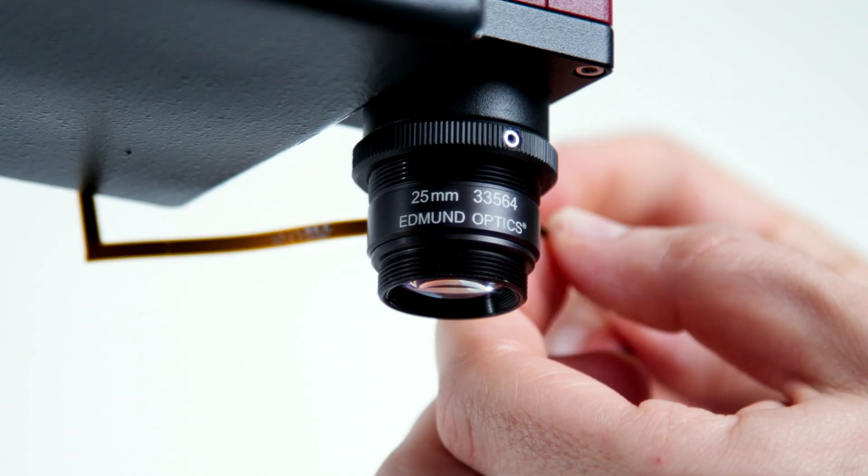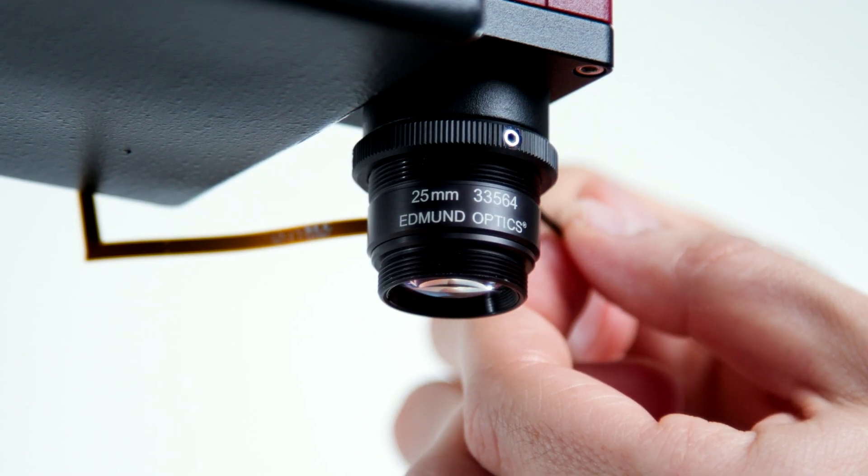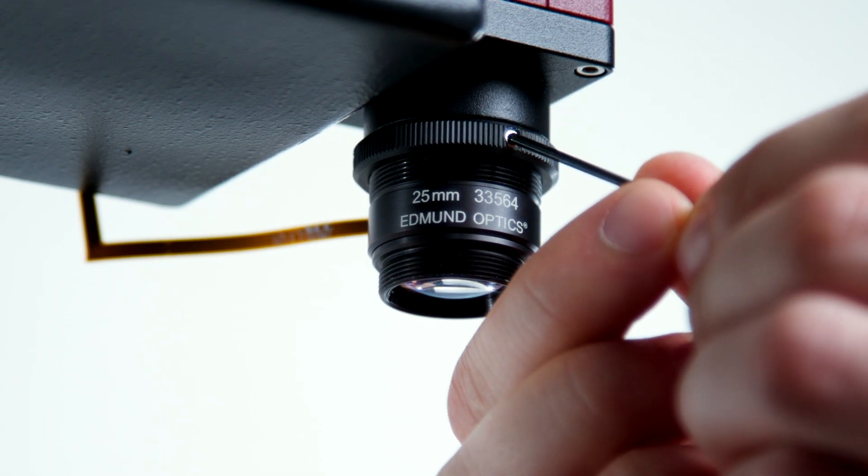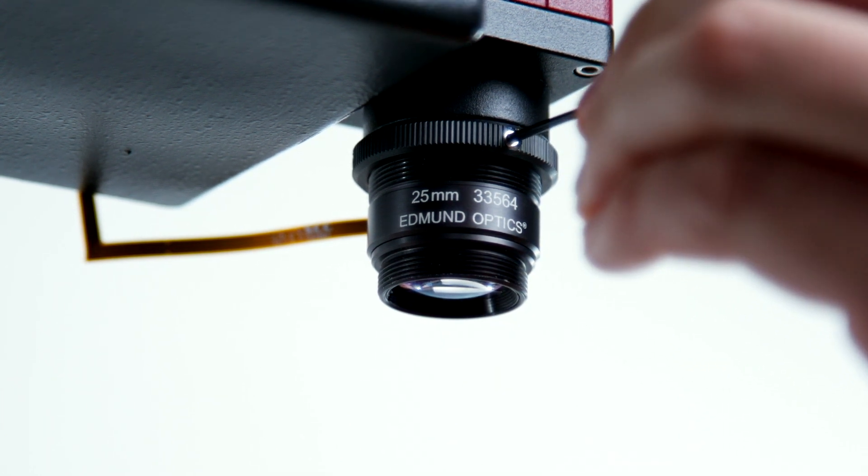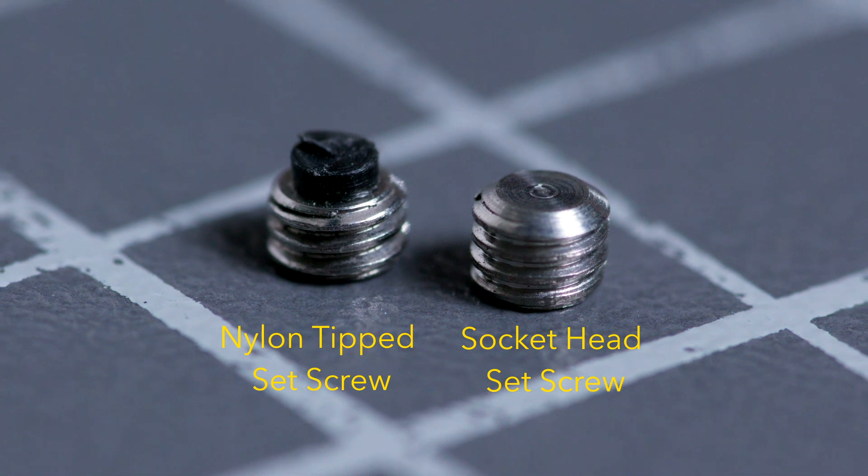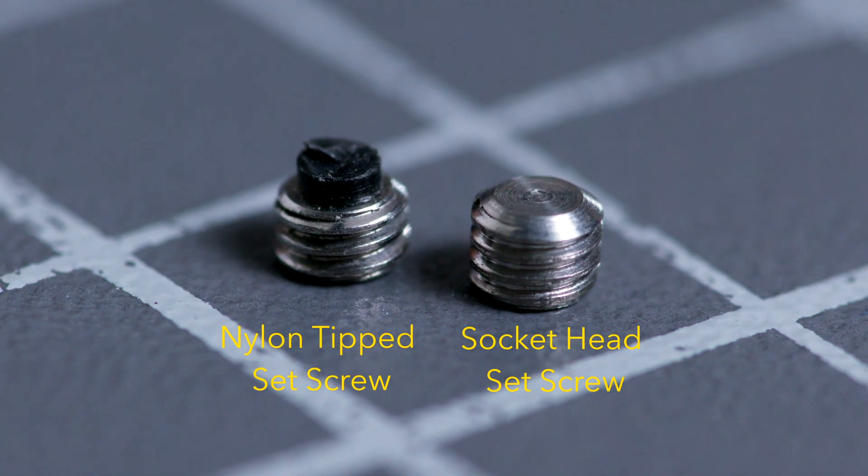Tighten the nylon tip set screw into place for a focal position that can later be readjusted. The nylon tip will protect the threads. To set focal position permanently, install the included socket head screws.